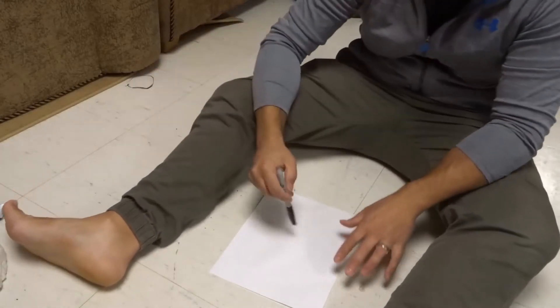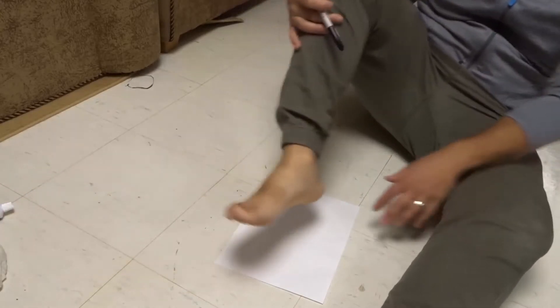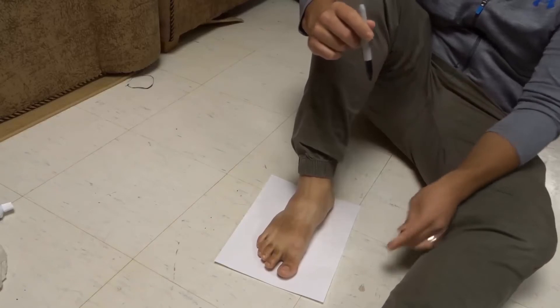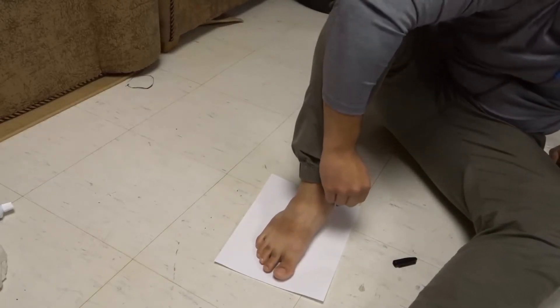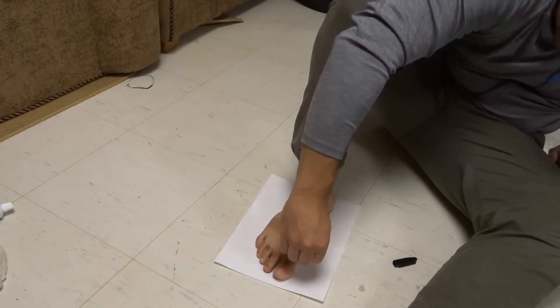What you want to do is get a blank sheet of paper just like this one right here. Place your foot flat down on that blank sheet of paper. Then you want to as closely as possible take a marker or a pen or pencil and trace your foot. Very simple and straightforward.